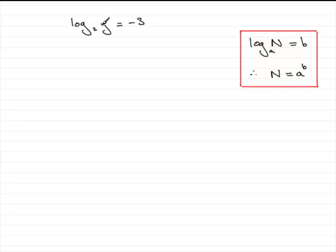So if we apply that here, we've got n corresponds to the y, the base a is 2, and b is the minus 3. So that means that therefore, n, which was y, equals the base a, which is 2, to the power b, b being the minus 3, 2 to the power minus 3.